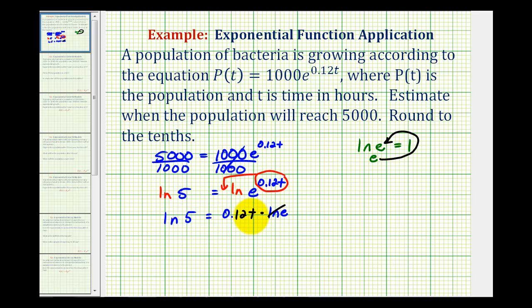So now to solve for t, we just need to divide both sides by 0.12. So on the right side we just have t.